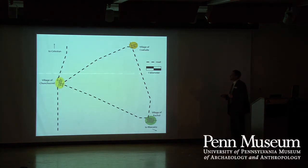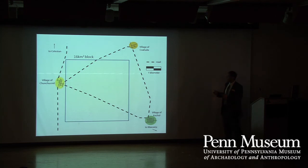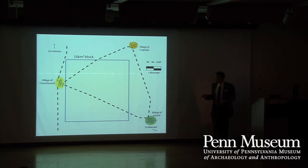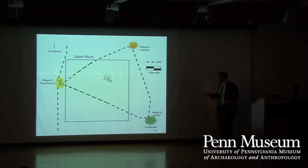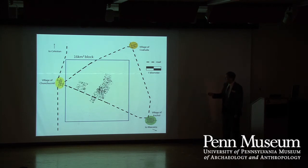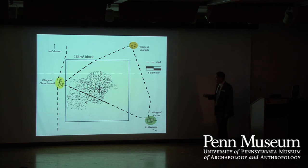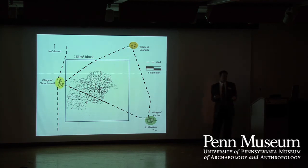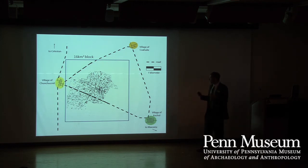In 1996 we began mapping the site, aiming for a 16-square-kilometer block equivalent to the area of Tikal mapped by Carr and Hazard in the late 1950s. We began in 1996 with a small piece, and added more in 1997, 1998, 1999, 2000, 2001, and 2002. In 2003 was a lab season, and we realized we'd spent seven seasons and hadn't even finished half of what we set out to do — because the features we were mapping were so intricate.